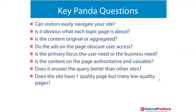Is the primary focus the user need or the business need? Obviously, you're trying to generate traffic for your business and find more clients and create more leads. But there is a way to do that that still gives the user exactly what they're looking for. Creating a website and optimizing a sales funnel can do both — optimize for a business need and a user need. Is the content on the page authoritative and valuable? Does the website answer the query better than other sites? Does the site have one quality page but many low-quality pages? We'll go into content themes and how to create solid content across the whole website to support overall website subject authority, creating higher rankings and more traffic.